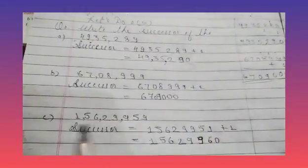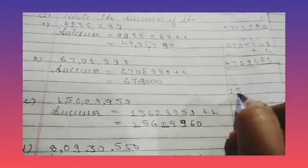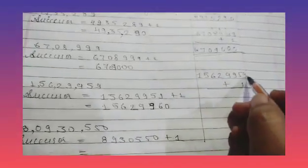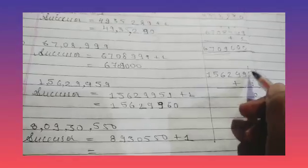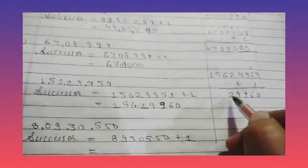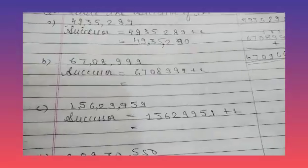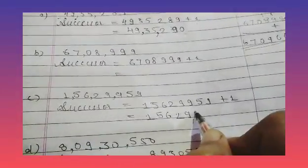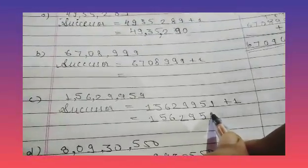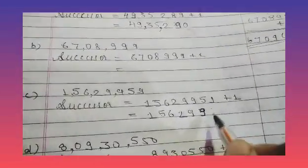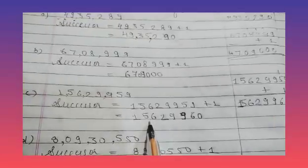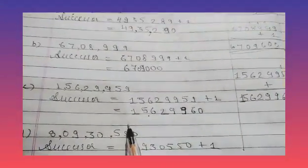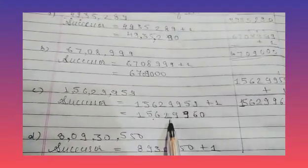Okay children, now part C: 1,56,29,959. We add 1 — 9+1=10, carry 1; 5+1=6; so it becomes 1 crore 56 lakhs 29,960.